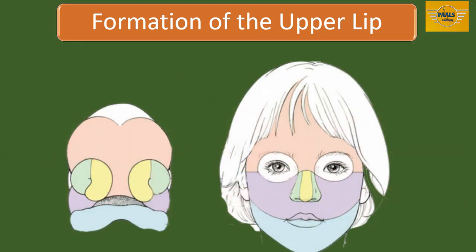Looking at the components of the upper lip: the mesodermal and ectodermal components of the lateral part are from the maxillary process. The mesodermal component of the medial part of the lip is from the frontonasal process, but the ectodermal part is an extension of the ectoderm of the maxillary process. This means the overlying skin of every part of the upper lip is derived from the ectoderm covering the maxillary process, and therefore the entire skin of the upper lip is innervated by the maxillary nerve.